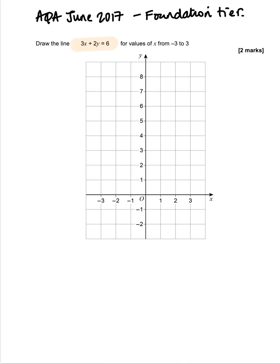Draw the line 3x add 2y equals 6 for values of x from negative 3 to 3. And this is a 2 mark question that appeared on a foundation tier paper. So they've drawn the grid for us that we're going to draw the line on, which is fantastic. What we need to do is we need to take this now and generate some values to plot a straight line.